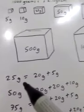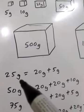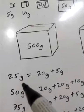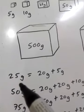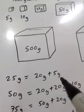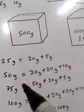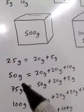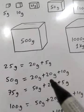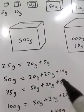To weigh 25 gram, if we don't have a 25 gram weight, we can use 20 gram plus 5 gram to make 25 gram. If we don't have a 50 gram weight, we can use 20 gram plus 20 gram equals 40 gram, then add 10 gram to make 50 gram.